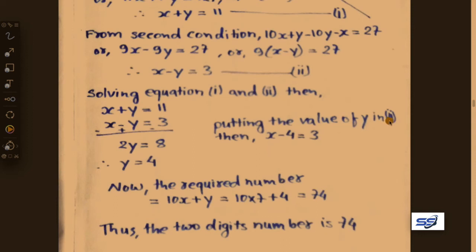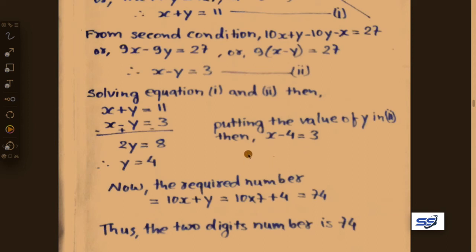Putting the value of y equals 4 into equation 2: x minus 4 equals 3, therefore x equals 3 plus 4 equals 7.